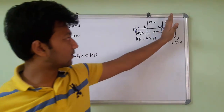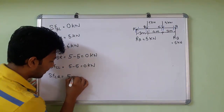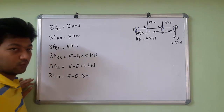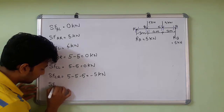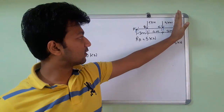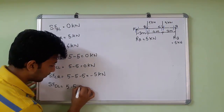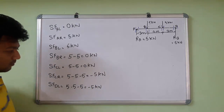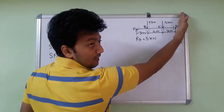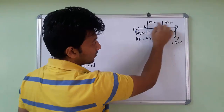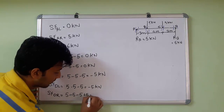SF CR — considering this section, we have RA of 5 kN upward, minus the 5 kN load, minus another 5 kN load downward. So 5 minus 5 minus 5 gives minus 5 kN. SF DL — same section up to D gives 5 minus 5 minus 5 equals minus 5 kN. SF DR — considering all forces including RB: 5 minus 5 minus 5 plus 5 gives 0 kN.